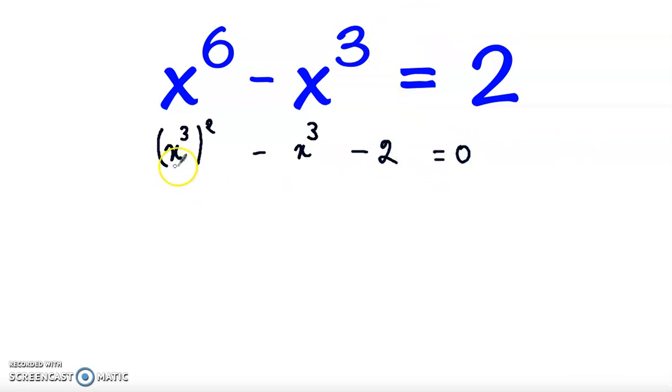Now we will use the substitution t equals x cubed, so the equation becomes t squared minus t minus 2 equals 0.